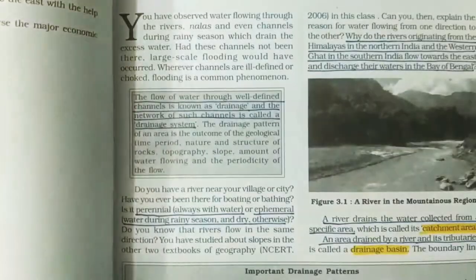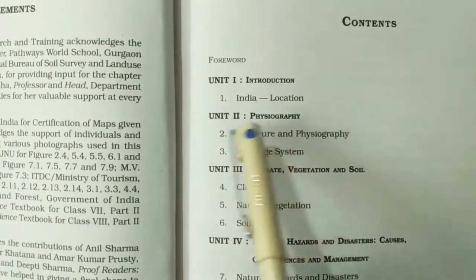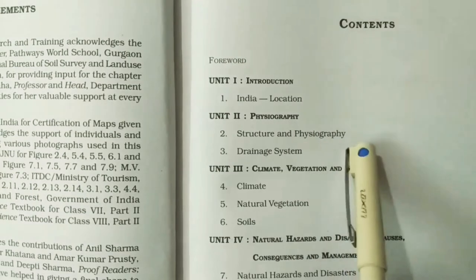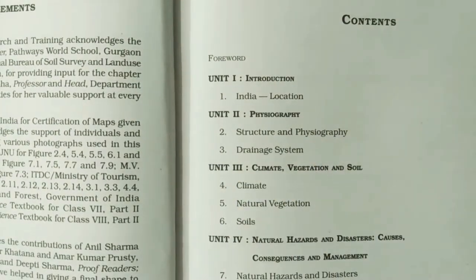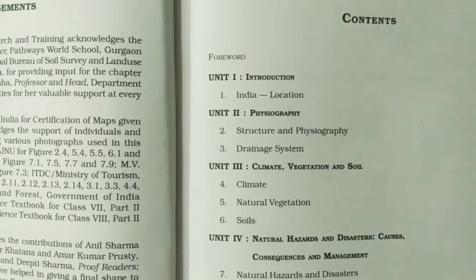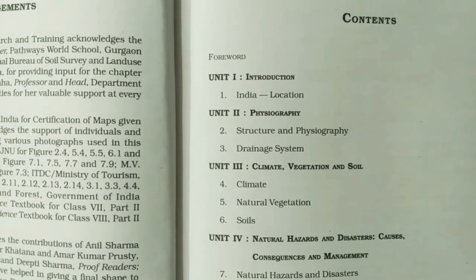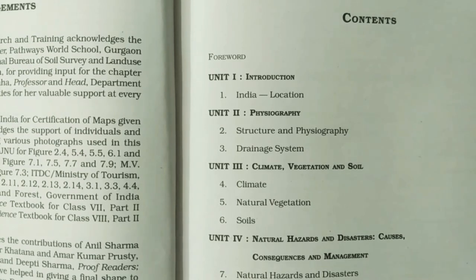Let's check the index. Unit 1 is Introduction — India's location — which we have done. Unit 2 is Physiography — Structure and Physiography — which we have done. Now we will do Chapter 3: Drainage System. I hope you liked this video. If you did, please give it a thumbs up and share it with friends who are preparing for government examinations in which GS or Geography is important. Don't forget to subscribe to the channel. Thank you so much — we'll see you in the next video with another interesting chapter. Bye bye!